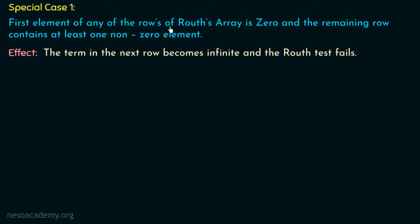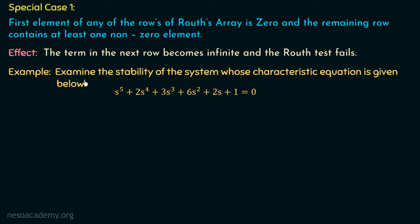Whenever the first element of any row of Routh's array is 0, the term in the next row becomes infinite and the Routh test will fail. Let's understand this with an example: examine the stability of the system whose characteristic equation is s⁵ + 2s⁴ + 3s³ + 6s² + 2s + 1 = 0.